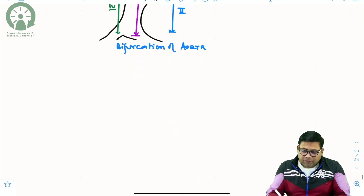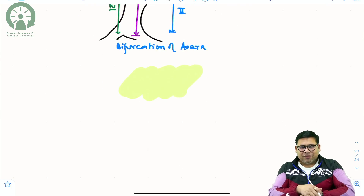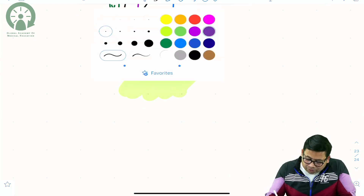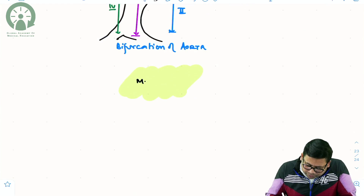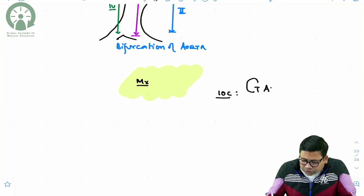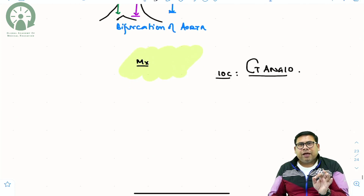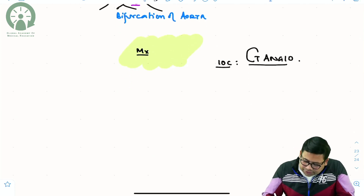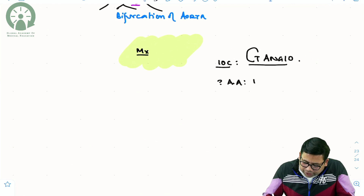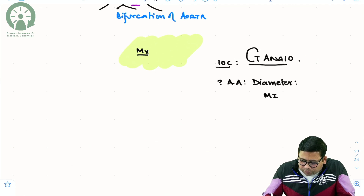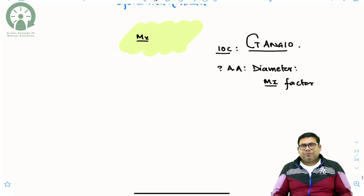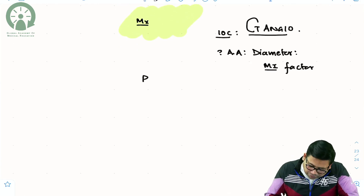Next, how do you evaluate and manage these patients? The investigation of choice is CT angiography. You need the aortic aneurysm diameter, which is the most important factor to decide management. When talking about treatment, there are two options: surgery or EVAR (Endovascular Aneurysmal Repair).